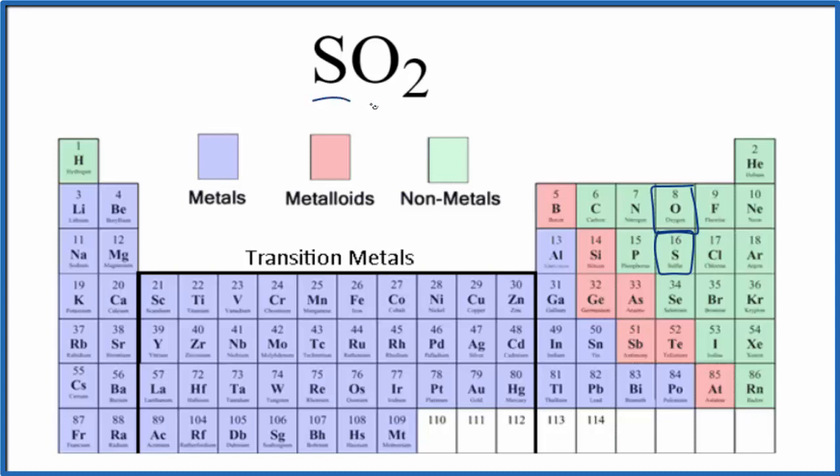So we have sulfur, a nonmetal, and an oxide. This is a nonmetal oxide. In general, when we react nonmetal oxides with water, we get an acidic solution. Let's look at that.